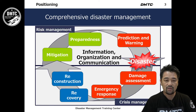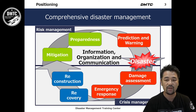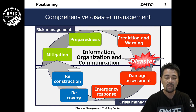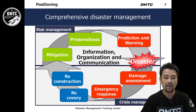This slide shows how we understand comprehensive disaster management. To think about shelter management, we must first understand the comprehensive structure. Before disaster, we call it risk management, which includes mitigation, preparedness, prediction, and early warning. Just after a hazard attack, we need damage assessment, emergency response, and recovery reconstruction — this after-disaster phase we call crisis management. We must think about both risk management and crisis management.